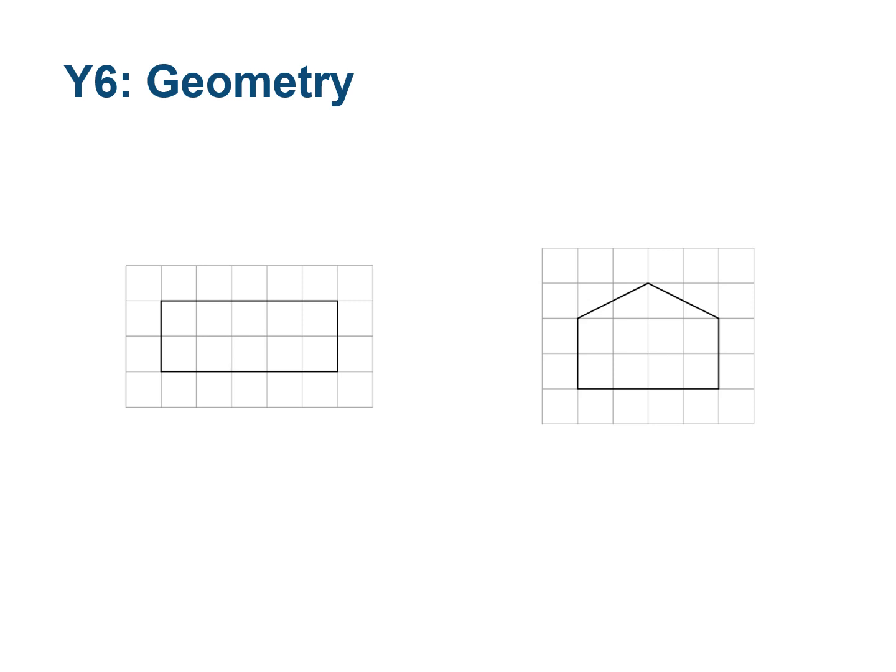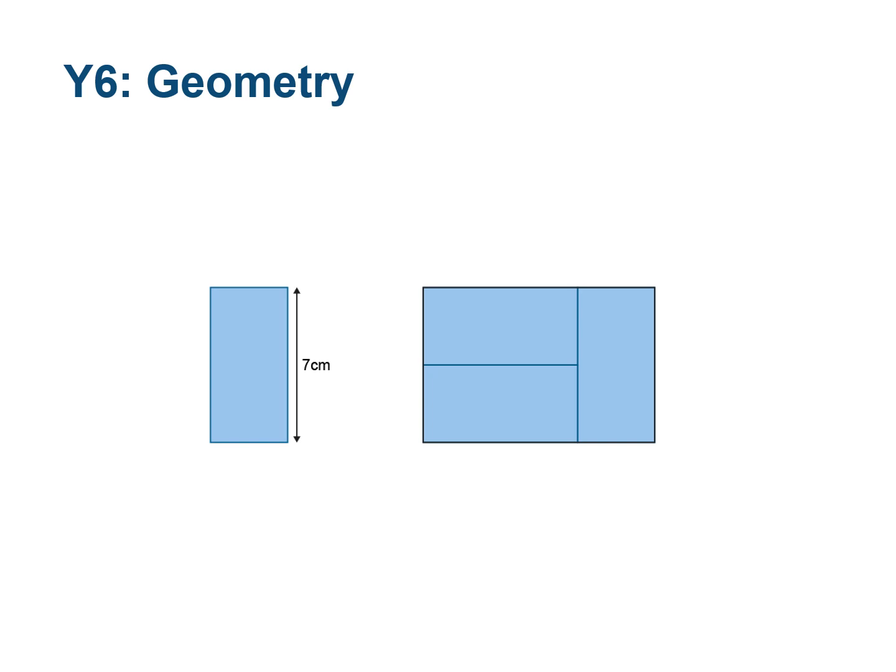Through Key Stage 2, pupils have learnt to measure perimeters, angles, and areas of shapes, and have learnt to draw polygons by joining marked points and draw angles of a given size. By the end of Year 6, pupils must be able to draw, compose, and decompose shapes defined by specific measurements — for example, drawing a rectangle on square centimetre paper with a perimeter of 14 centimetres, or drawing a pentagon with an area of 10 centimetres squared. Pupils should also be able to reason with compound shapes — for example, using a given length of seven centimetres on a rectangle to find the perimeter of a compound shape. Composing and decomposing shapes prepares pupils for solving geometry problems in Key Stage 3 — for example, finding the area of a trapezium by decomposing it into a rectangle and two triangles.